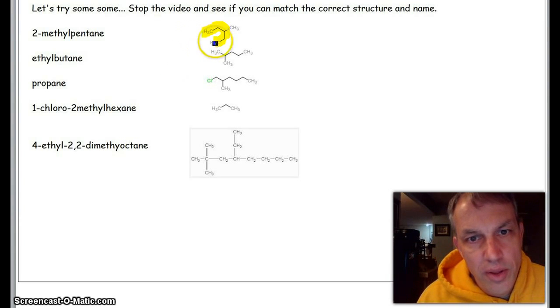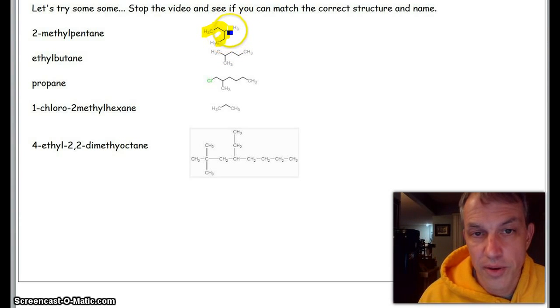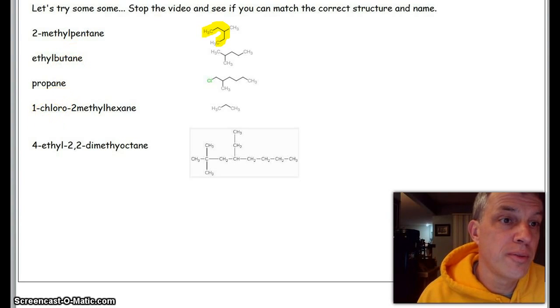If I have five carbons there, on the third carbon is this right here, which is a methyl. So there's a mistake here—this should not be 2-methylpentane, it really should be 3-methylpentane. So let's fix that right now.